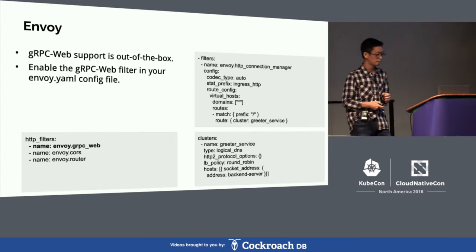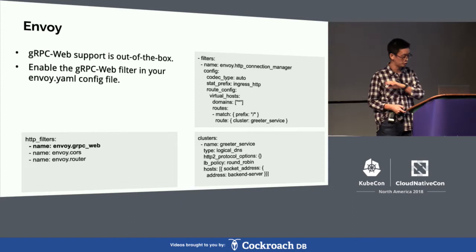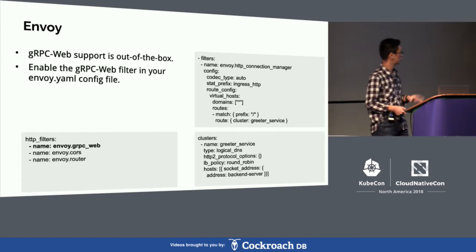A quick note about Envoy — it's very easy. You configure your Envoy instance with your routes, you point to your backend GRPC services in the bottom right of your config, and basically the one thing you need to enable is the envoy.grpc_web filter. That's the only thing you need to do in terms of enabling GRPC Web.